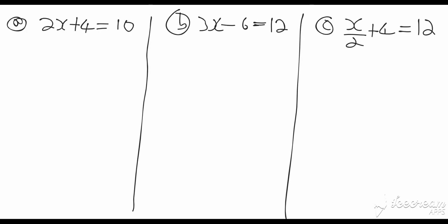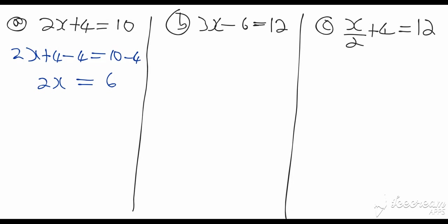Now let us look at how we manually solve these equations. From our scale we learned that to get rid of what we don't want, we do the opposite operation. For question a: 2x plus four equals ten. Our job is to find x, so we must get x by itself. We need to get rid of the plus four first, so we subtract four from both sides: 2x plus four minus four equals ten minus four, giving 2x equals six.